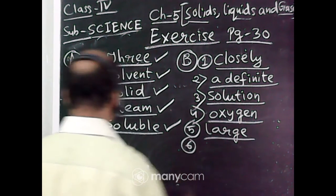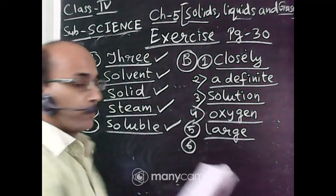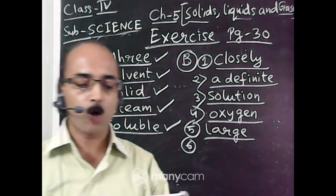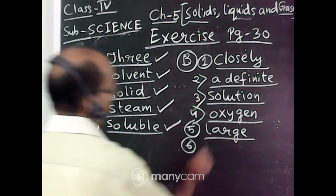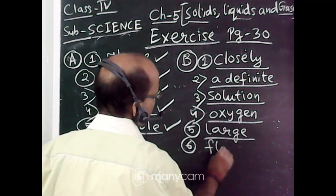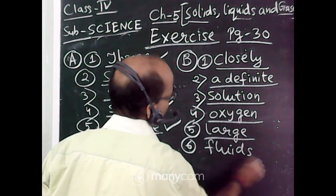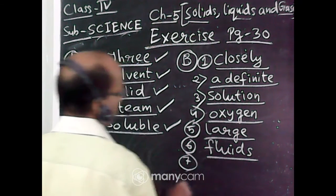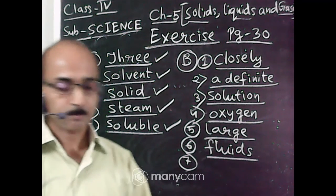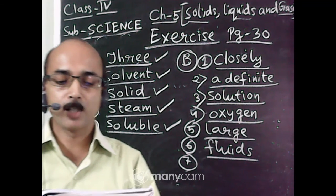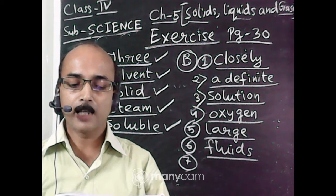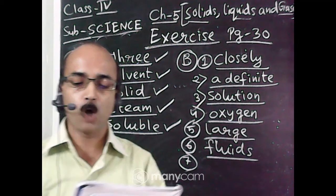Number six: gases and liquids are called dash. They are called fluids. The answer is fluids. Number seven: the substance that dissolves in a liquid is called solute.